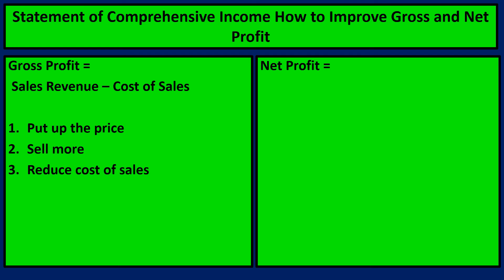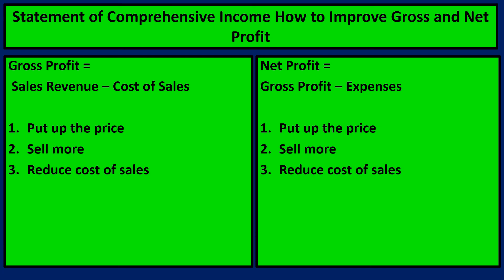On the other hand, if we're asked how to improve net profit, net profit is gross profit minus expenses. So we have exactly the same three things, because obviously we either put up gross profit or we reduce expenses. So we could put the price up, we could sell more, or reduce cost of sales. The final one we could do is to reduce our overheads or reduce our expenses. This would be perhaps moving to cheaper premises, cutting back on staff hours, or trying to get cheaper bills. All those sort of things will improve our net profit.